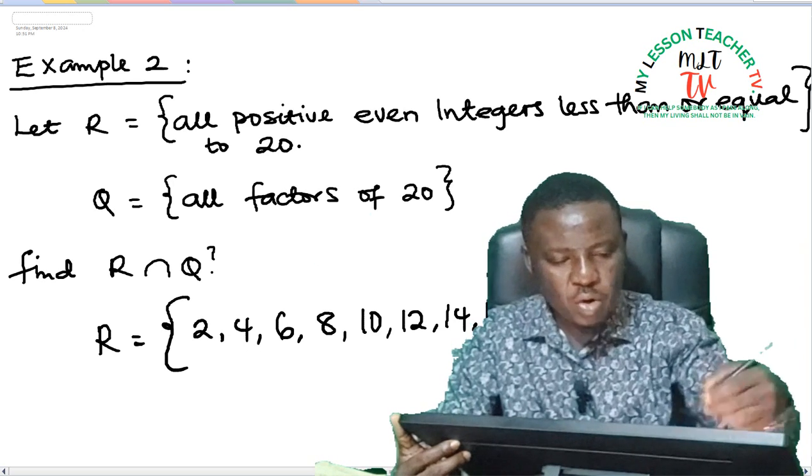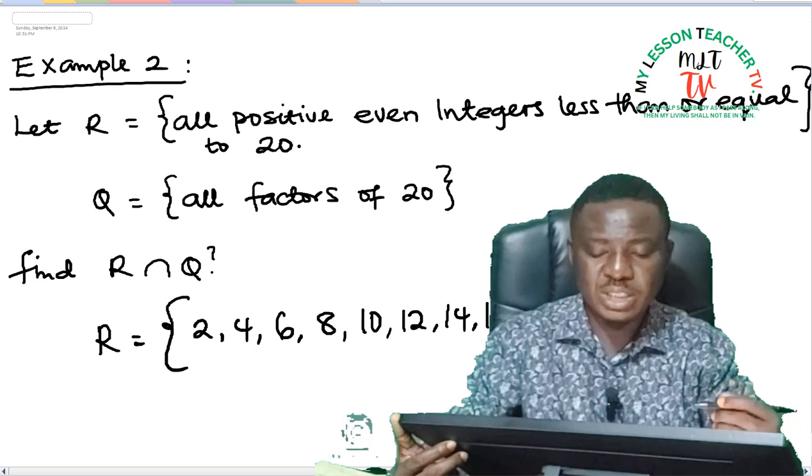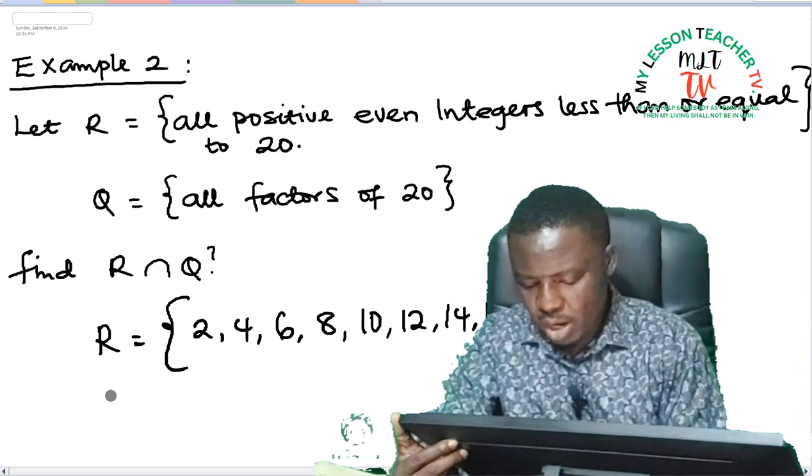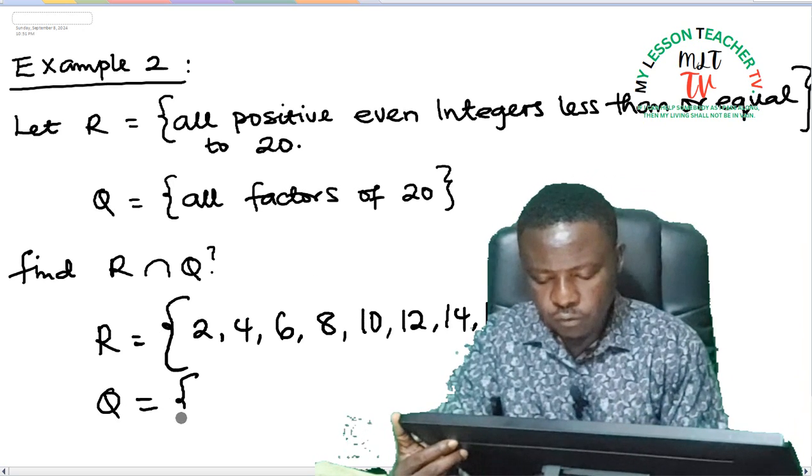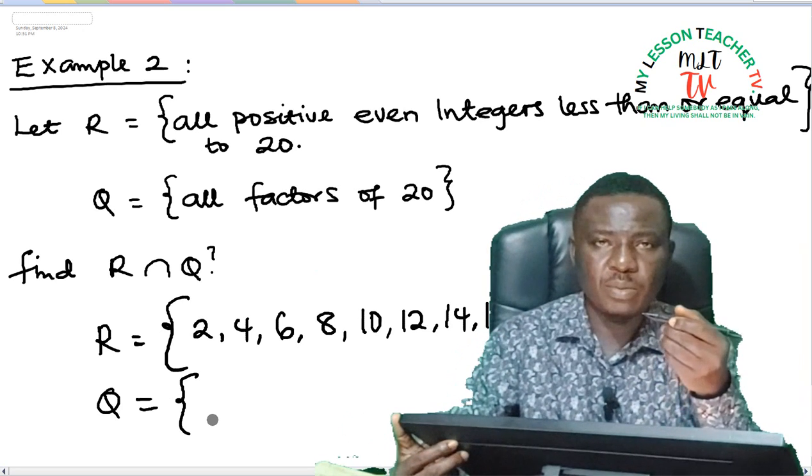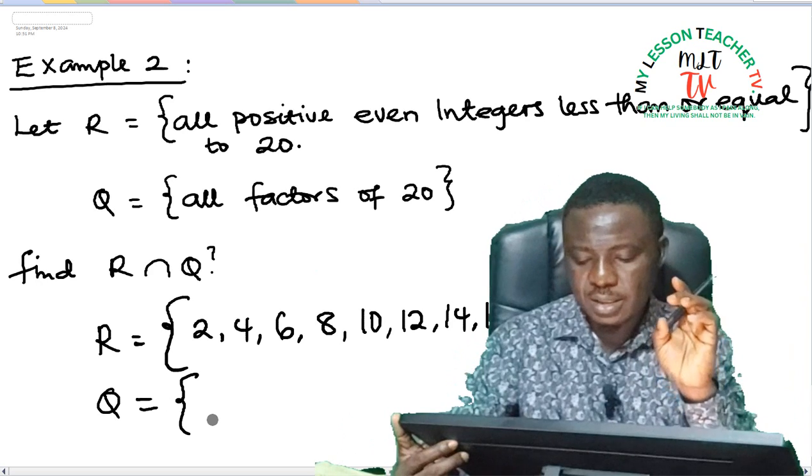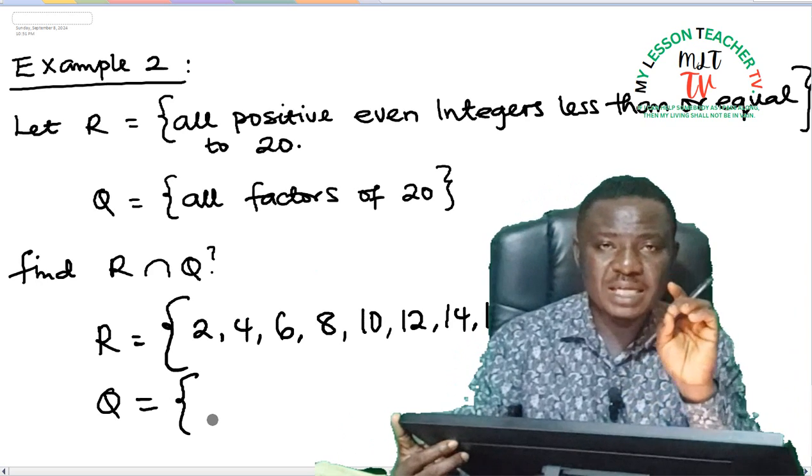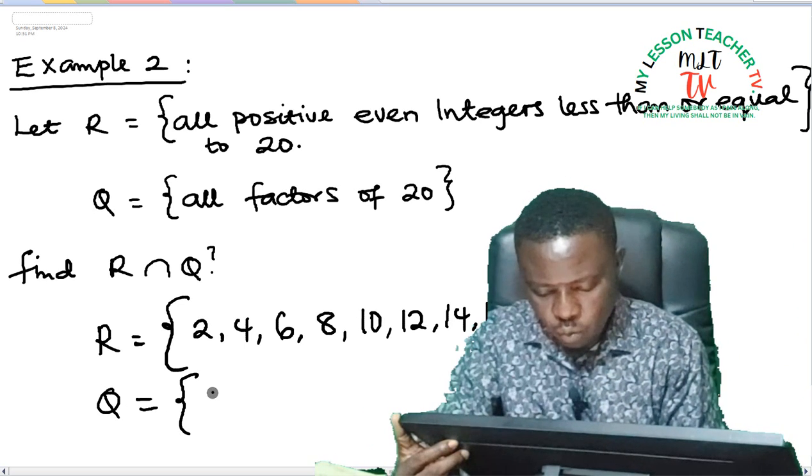Remember, they said less than or equal to 20—that simply means that 20 is inclusive. While Q is defined as all factors of 20. Factors of 20, by factor of 20 we mean those numbers, smaller numbers, that can divide 20 without the remainder. So I have 1—1 can divide 20 without the remainder.